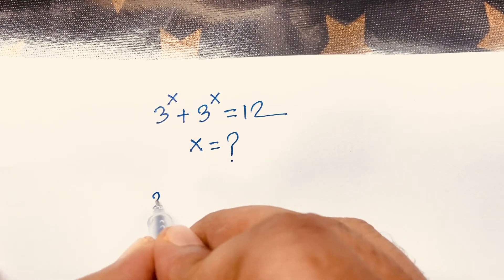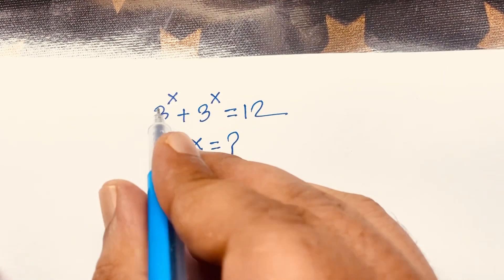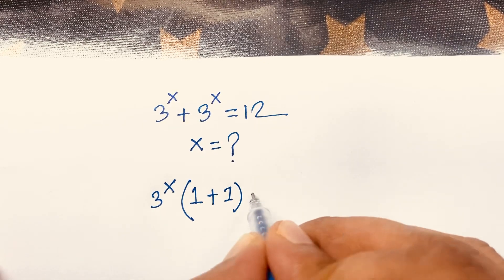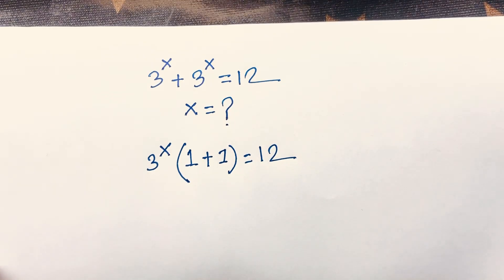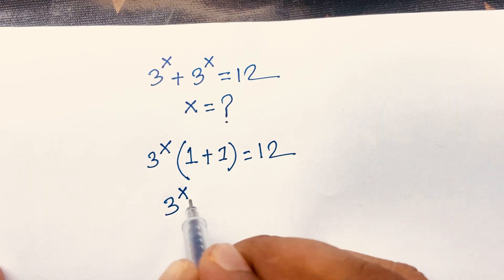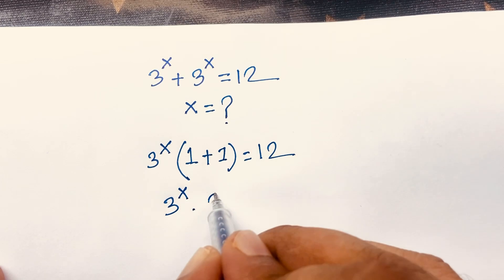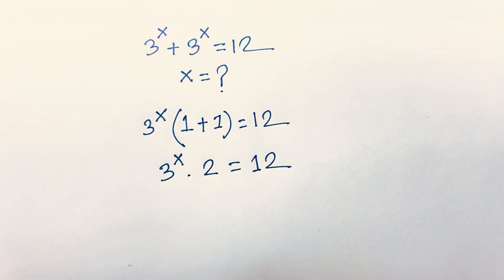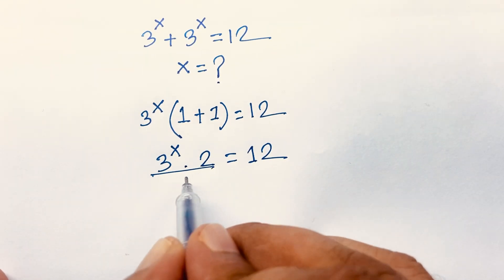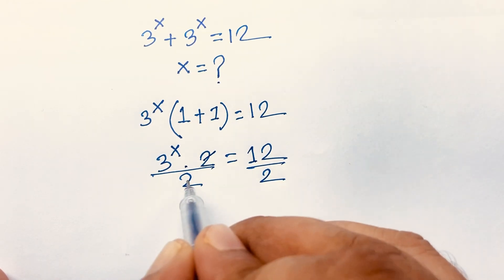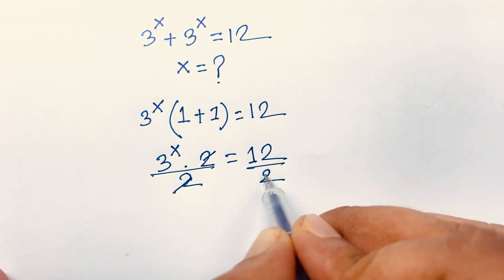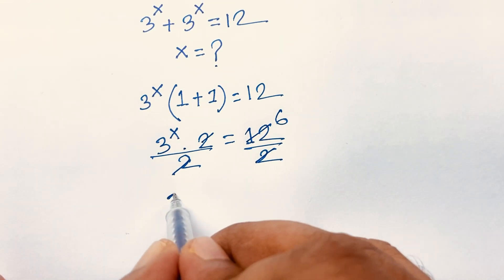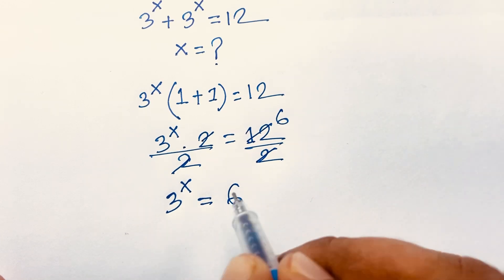Here, 3 to the power x is common, so factoring it out: 3^x times (1 + 1) equals 12, which gives 3^x times 2 equals 12. Dividing both sides by 2, we get 3 to the power x is equal to 6.